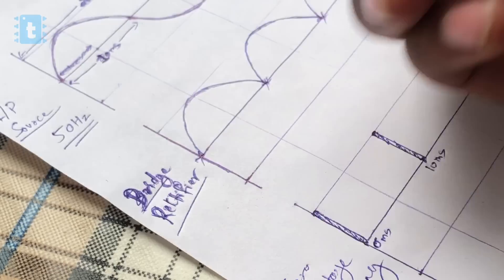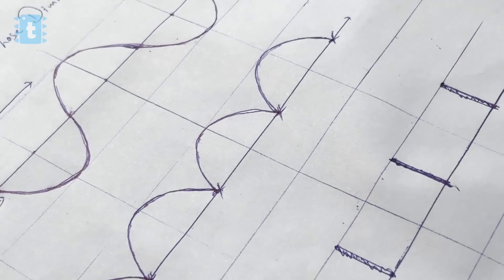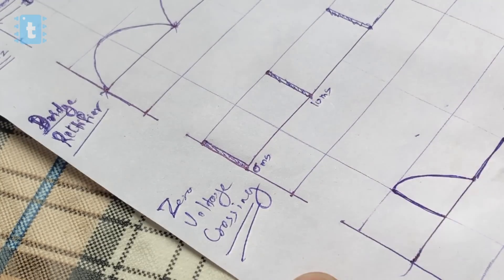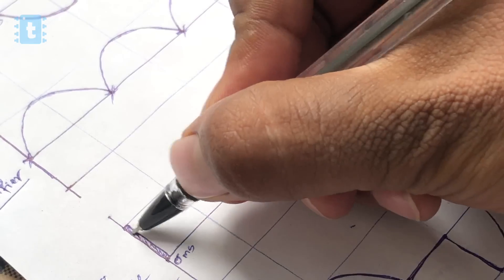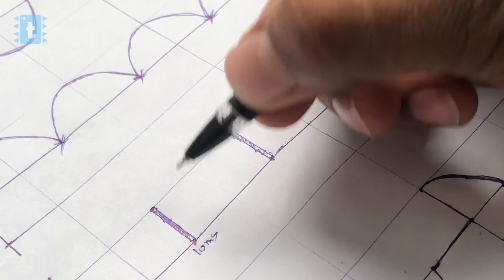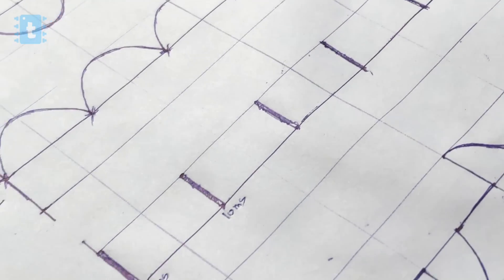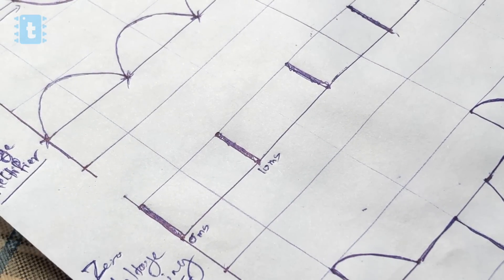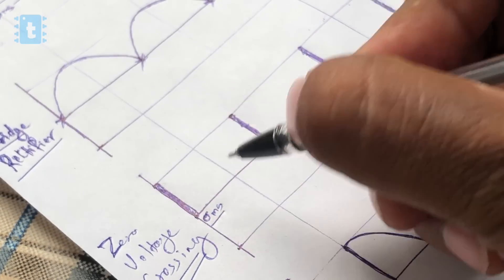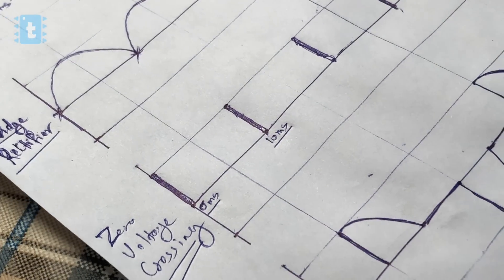Now after the bridge rectifier, the signal will look something like this - so here we have no negative cycle, all the cycles are positive cycles only. Okay, now at the output of zero crossing voltage circuit we'll be getting pulses every time the signal crosses the zero value. Now moving ahead to dim the appliances, we need to trigger the TRIAC at different intervals between 0 milliseconds to 10 milliseconds.